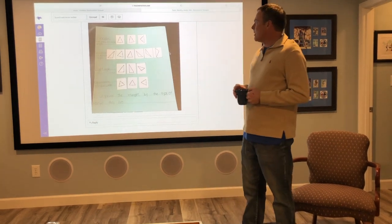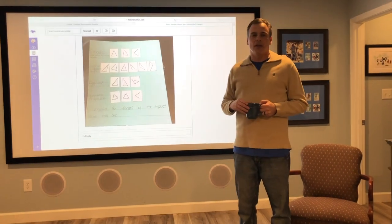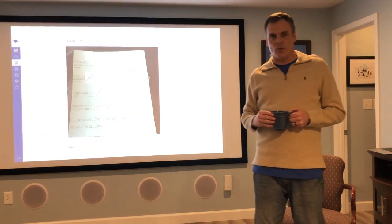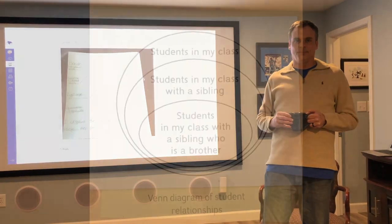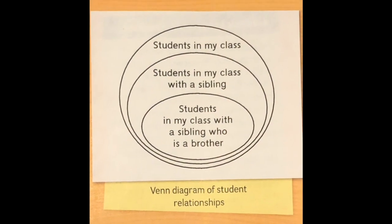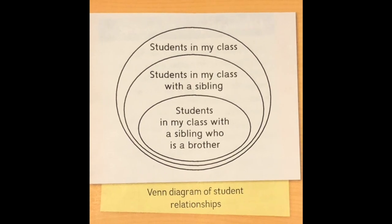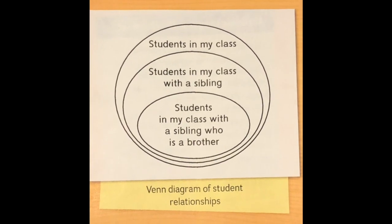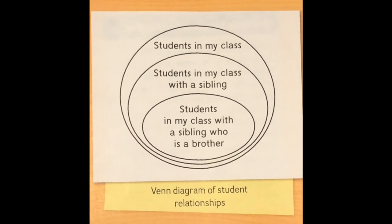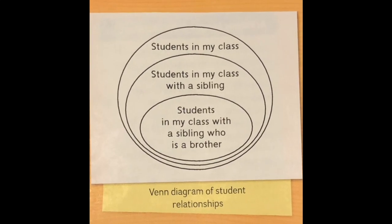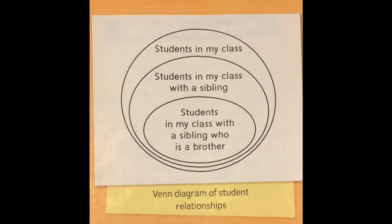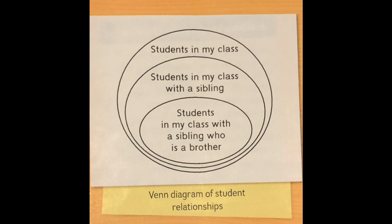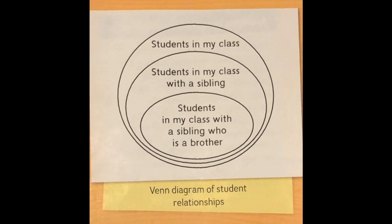Today what we're going to talk about in the hierarchy of triangles is the difference between categories and subcategories. Other ways that you could organize your triangles would be by using a Venn diagram. Sometimes mathematicians use Venn diagrams to represent relationships like this with a diagram called a hierarchy.